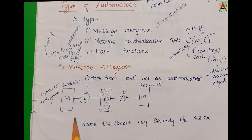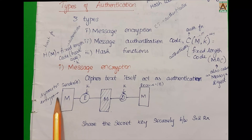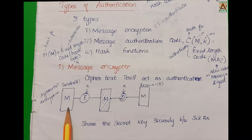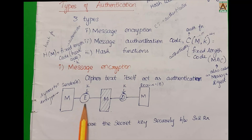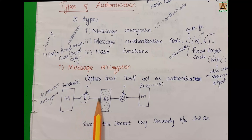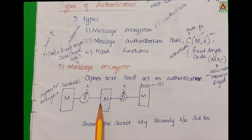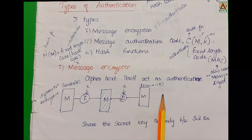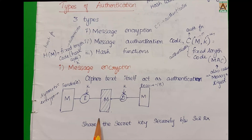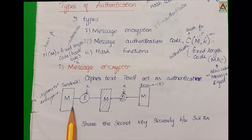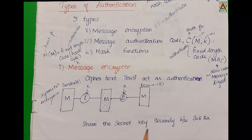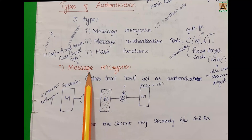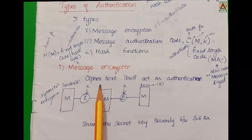For Symmetric Encryption, the sender sends message M which is encrypted using a key to produce encrypted ciphertext. On the receiver side, the message is decrypted using the shared secret key. This enables secure communication between sender and receiver based upon a shared secret key. This is one type of authentication using Message Encryption.